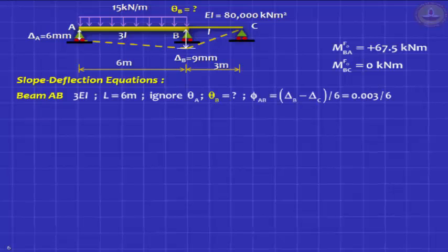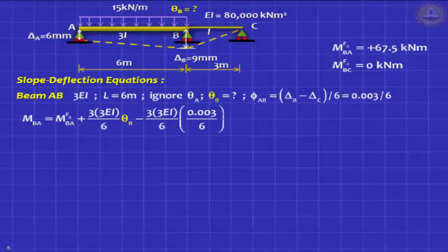Now, we write down the slope deflection equations. For beam AB, you should write actual rigidity. In this case, it is 3EI. Its span is 6 meters. Its chord rotation also, you must correctly write. It's delta_B minus delta_A by L. It turns out to be clockwise positive, 0.003 meters divided by 6 meters. And so you can write the equation for MBA.